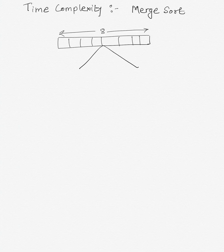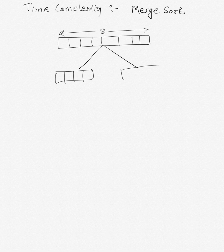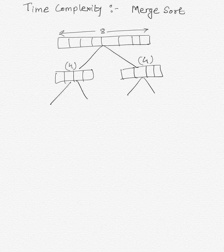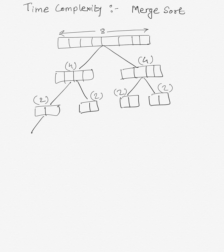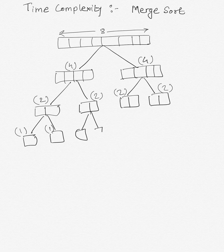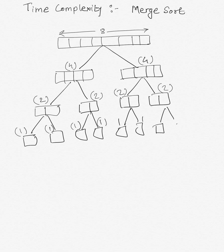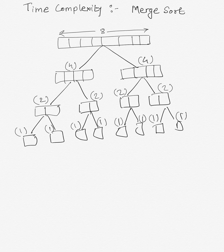We divide the main input into two sub-arrays. Since the input size is 8, we will have two sub-arrays of length 4 each. Then these two sub-arrays of length 4 will be further divided into sub-arrays of length 2, and then they will be divided into sub-arrays of length 1.